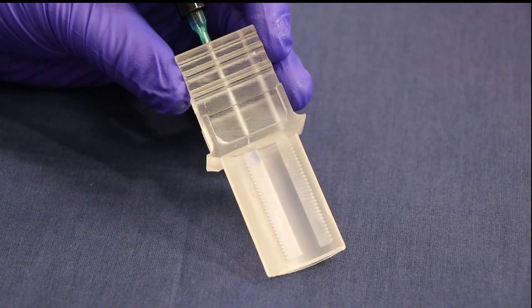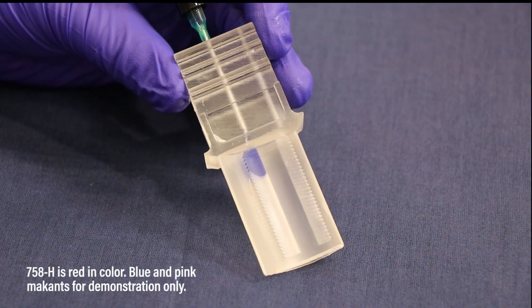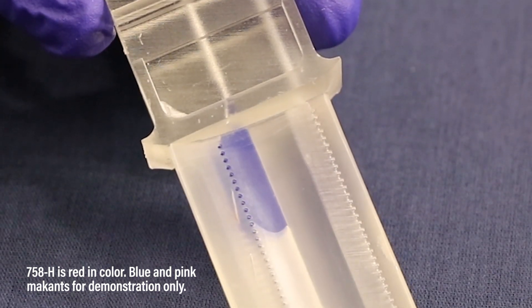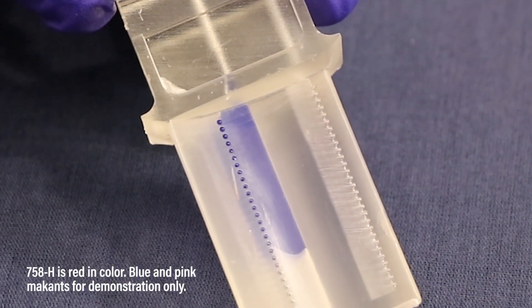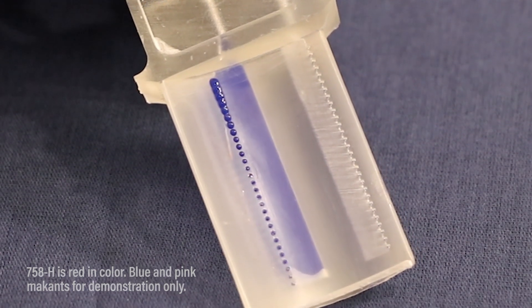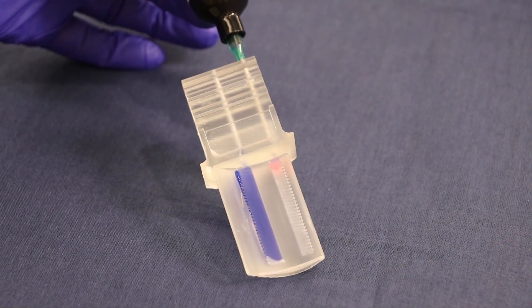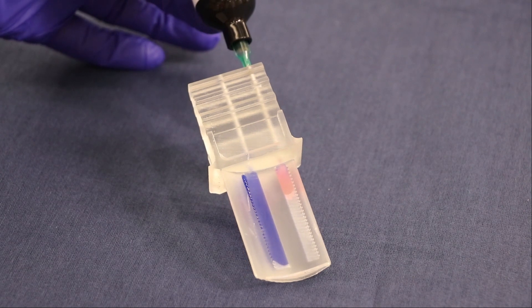To illustrate how 758H is used to protect internal and external features of turbine components, a clear 3D printed turbine blade is shown being injected with the maskant, which is red in color and highly visible on surfaces.